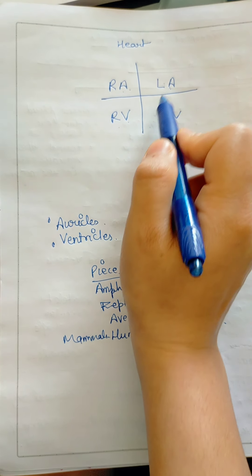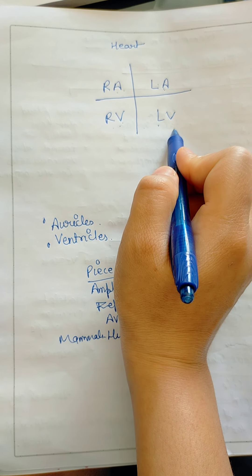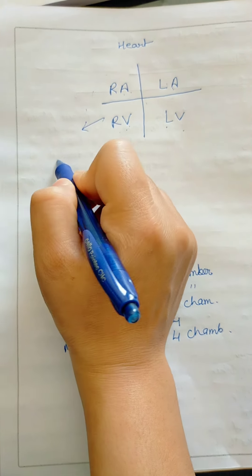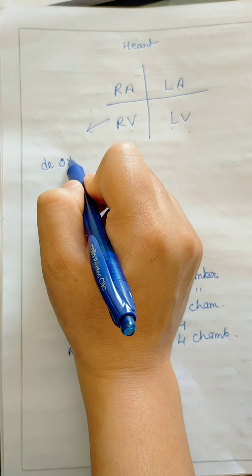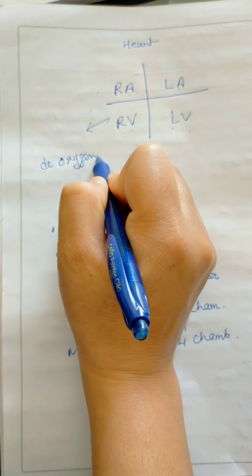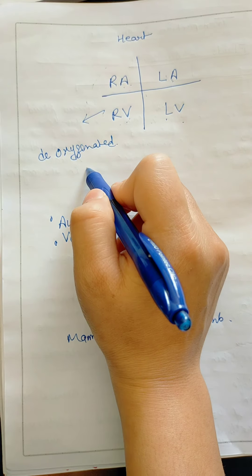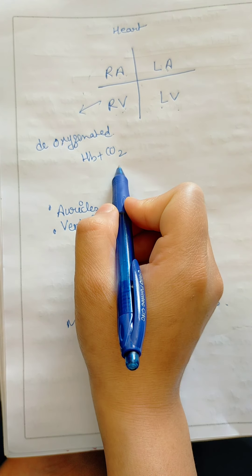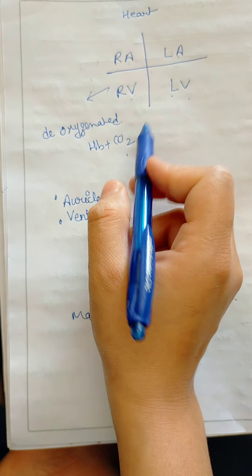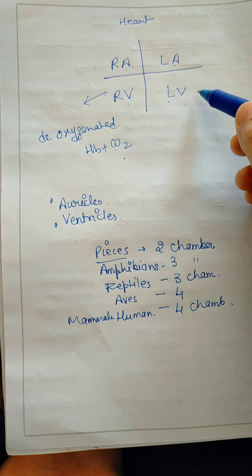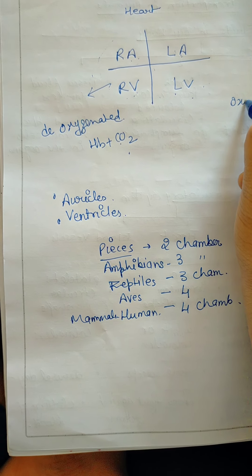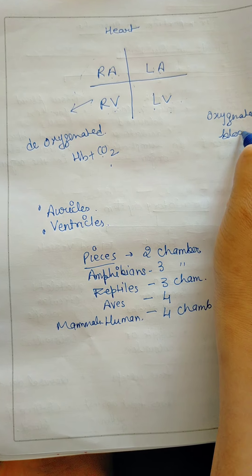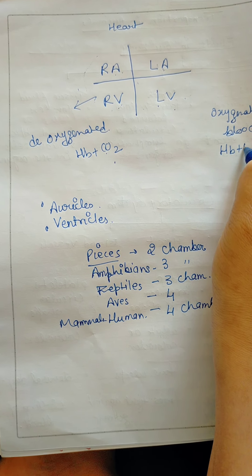Right atria, left atria. Right ventricles, left ventricles. They're four-chambered heart. The right side contains the blood, deoxygenated blood which is the blood. Deoxygenated means the blood is made from CO2, which is the blood contained in CO2. The left side contains oxygenated blood. Oxygenated means which is your O2.